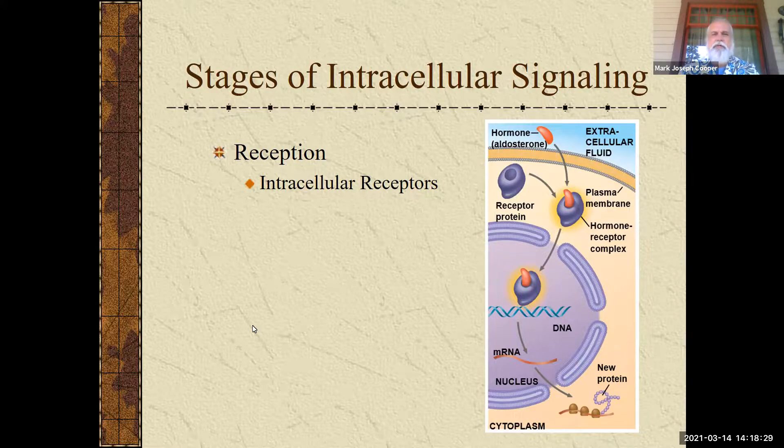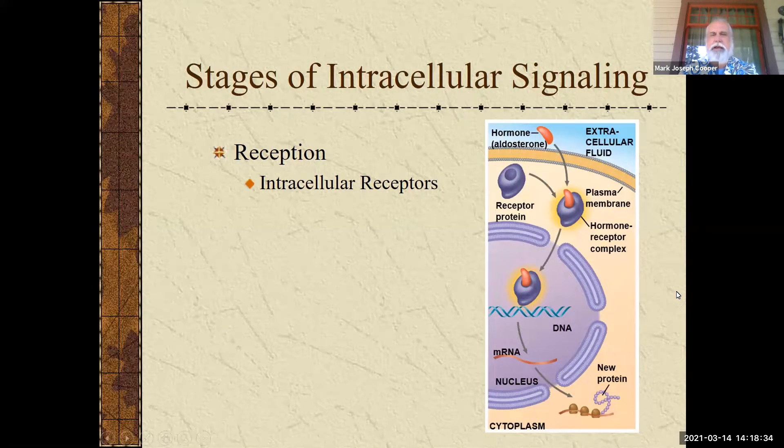So all four of these receptor types are basically trying to get signals to start a pathway. Next we will talk about transduction.